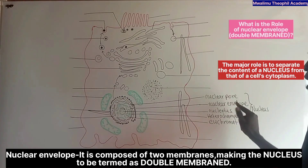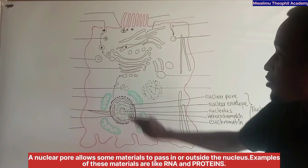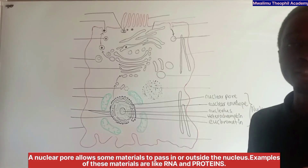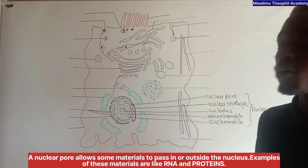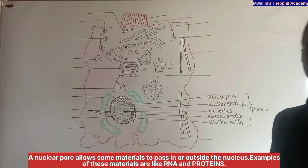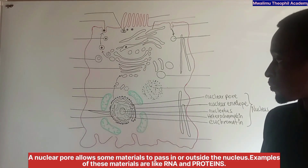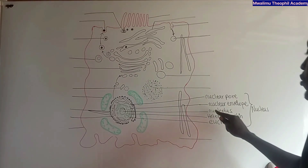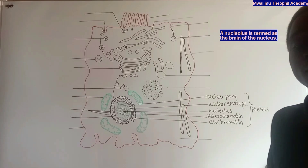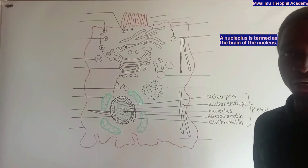Another part of the nucleus is the nuclear pore. A nuclear pore allows some materials to pass in or out of the nucleus; examples of these materials are RNA and proteins. Also we have the nucleolus, which is called the brain of the nucleus.